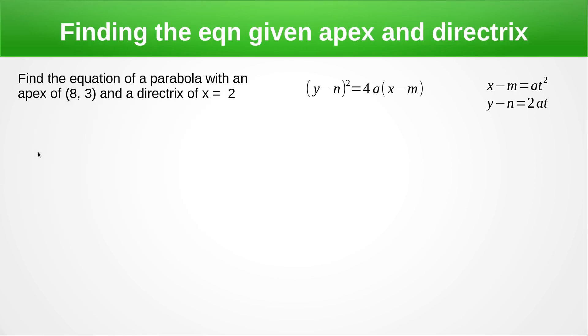So let's find the equation of a parabola when we know the apex and the directrix. In this one we've got the apex at (8, 3) and the directrix at x equals 2.